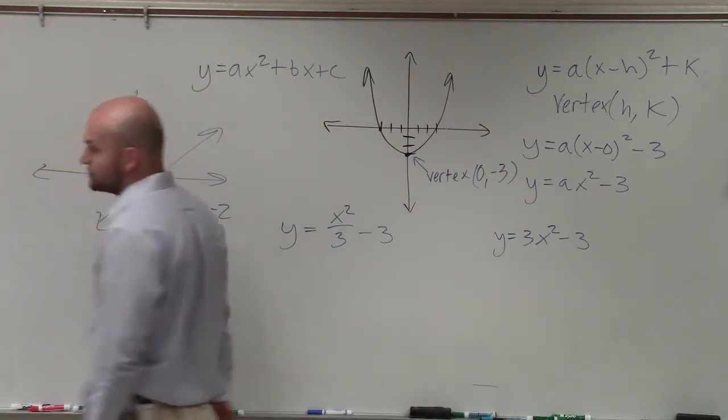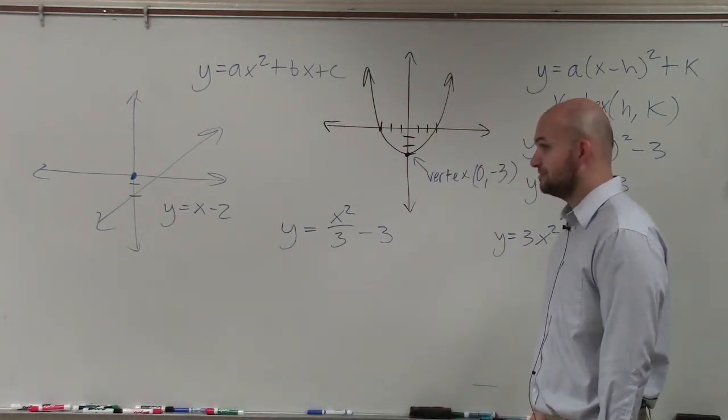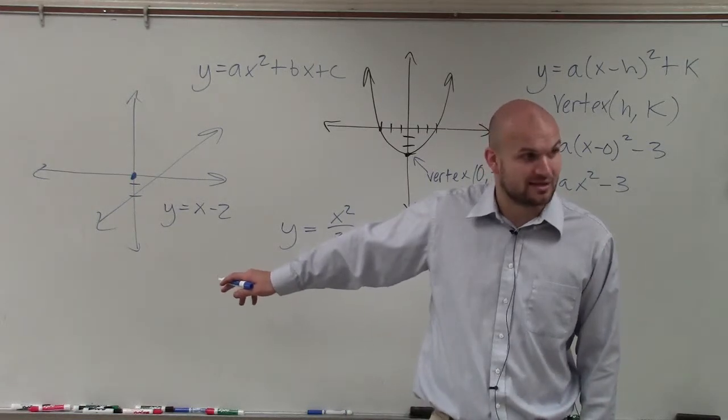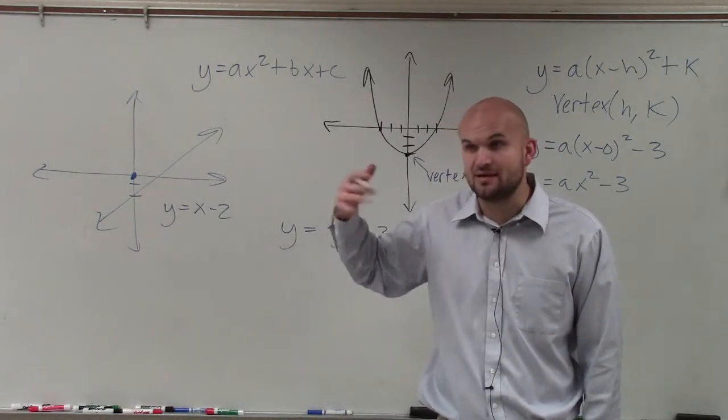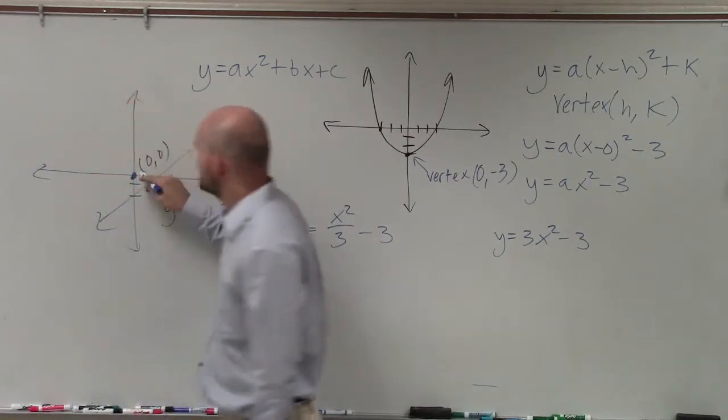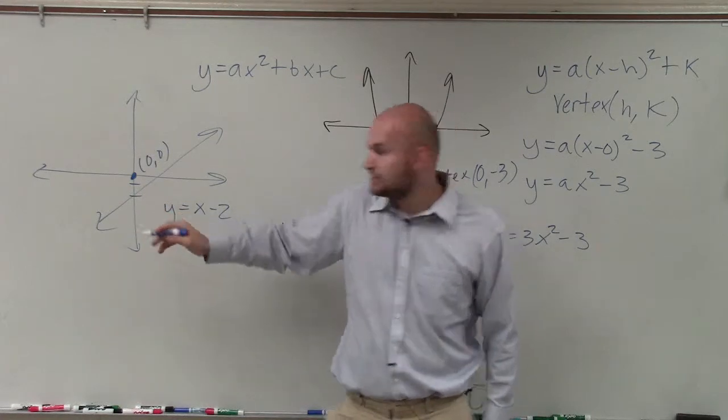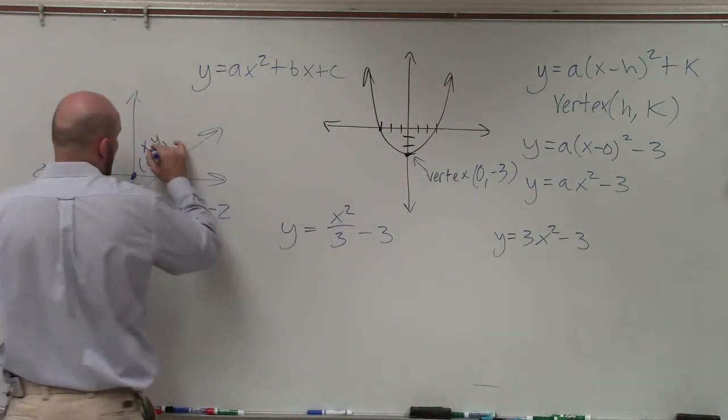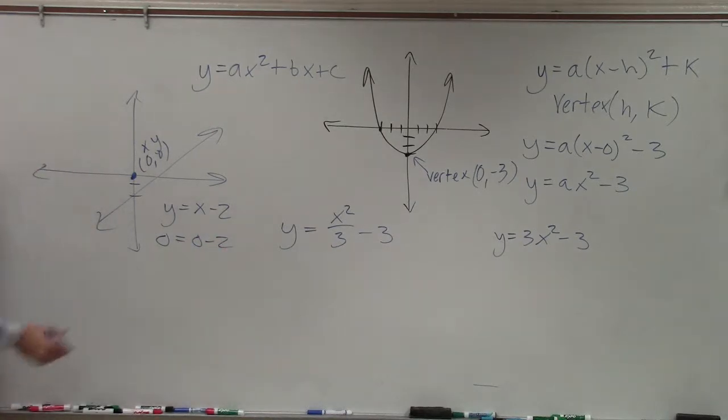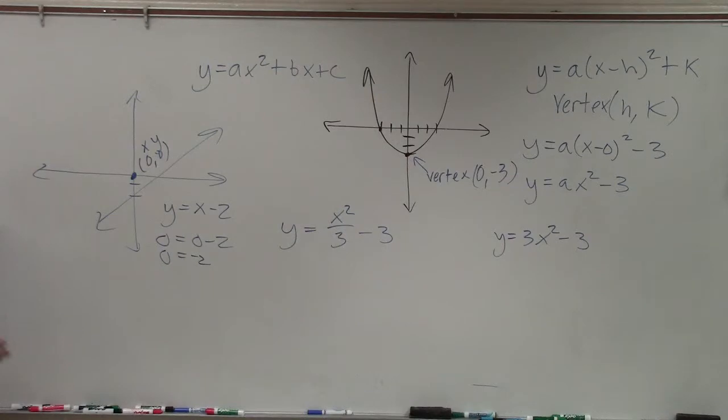Now, Marissa, does the point 0, 0 lie on the line? Are you sure? Yes. It's fairly obvious that that point is not lying on the line. Correct? Everybody can obviously see that? Algebraically, we can show it doesn't lie on the line because the point for the origin is 0, 0. So what I can do is I can plug that in for x and that for y. 0 equals 0 minus 2. 0 equals negative 2. Does 0 equal negative 2? No.